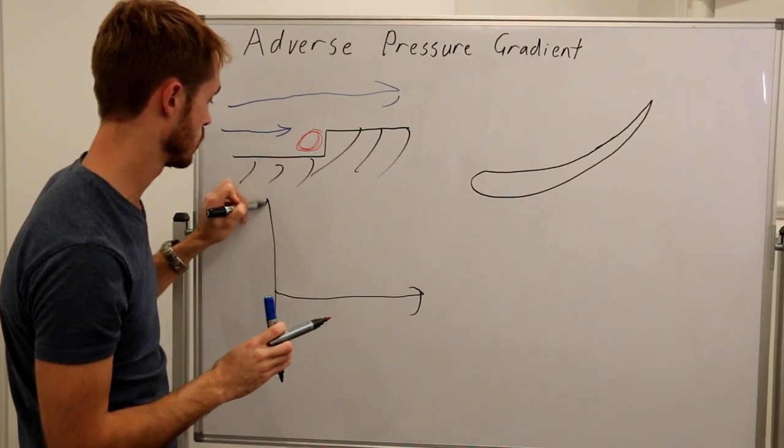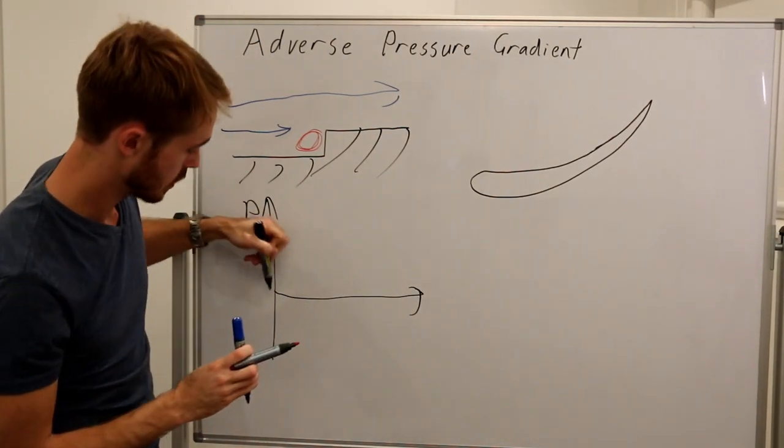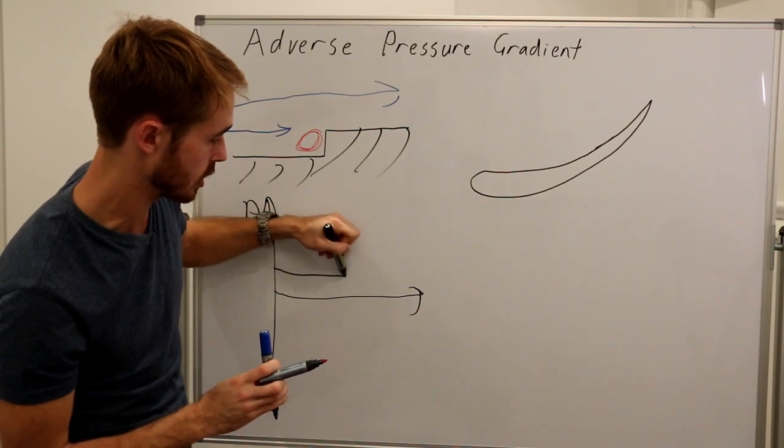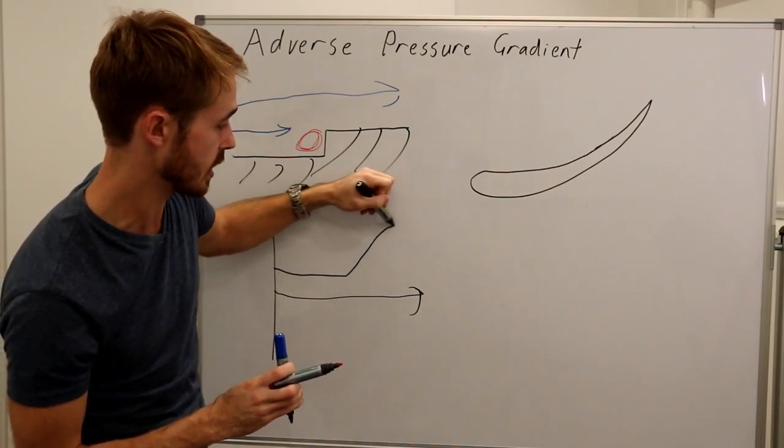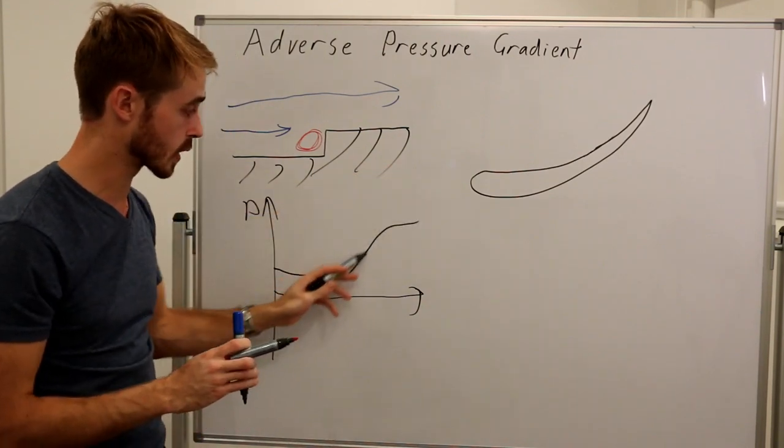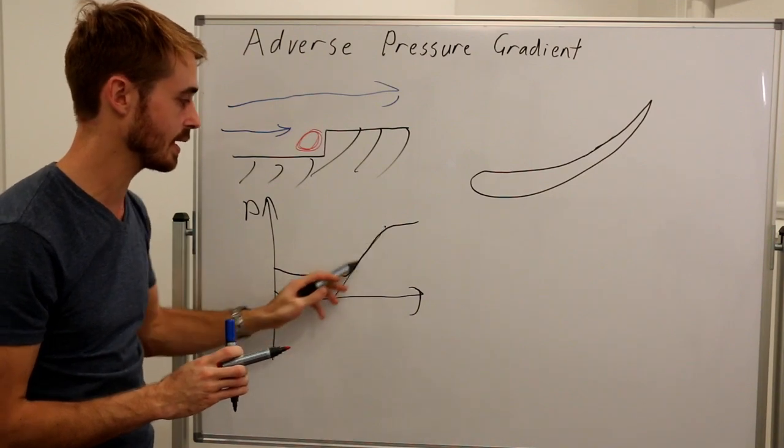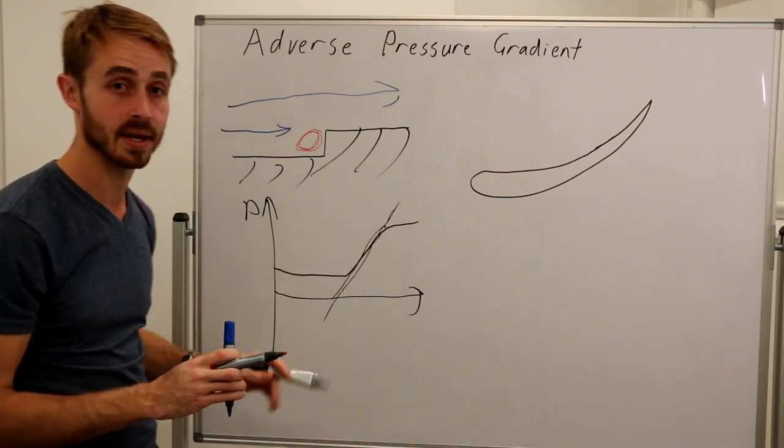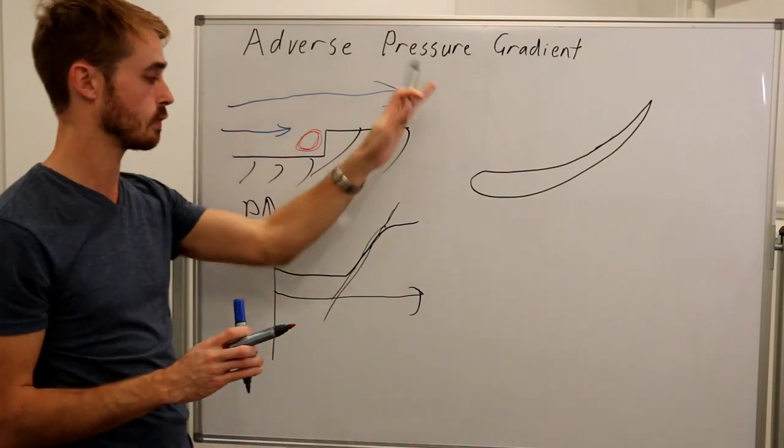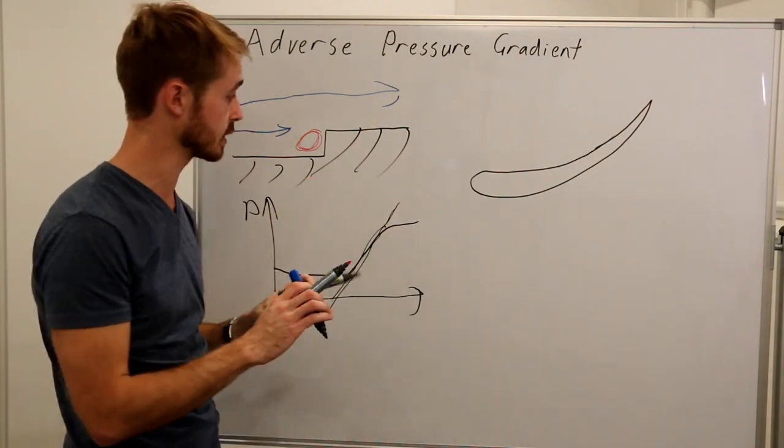On a pressure plot P, we can see that the flow is going to come along at a roughly constant pressure and then it's going to increase here. Now the gradient of this line here is your pressure gradient. We can see here it's a positive gradient, which is the adverse pressure gradient. The pressure is increasing as we go along.